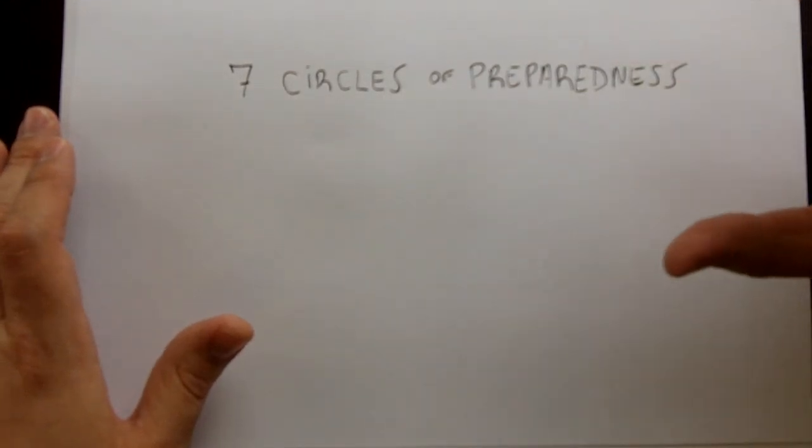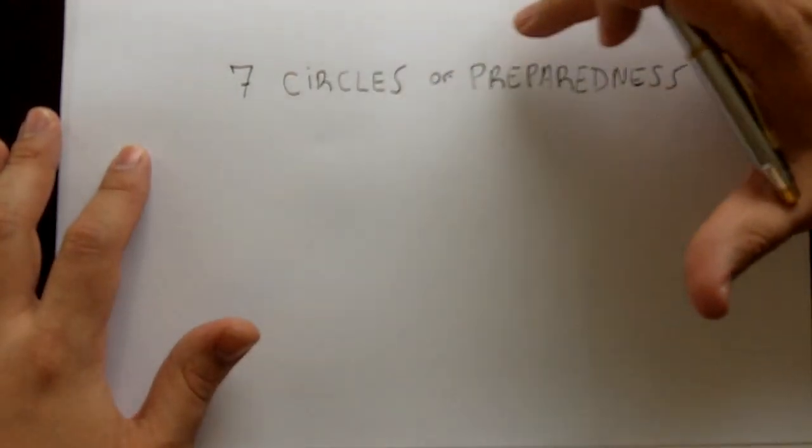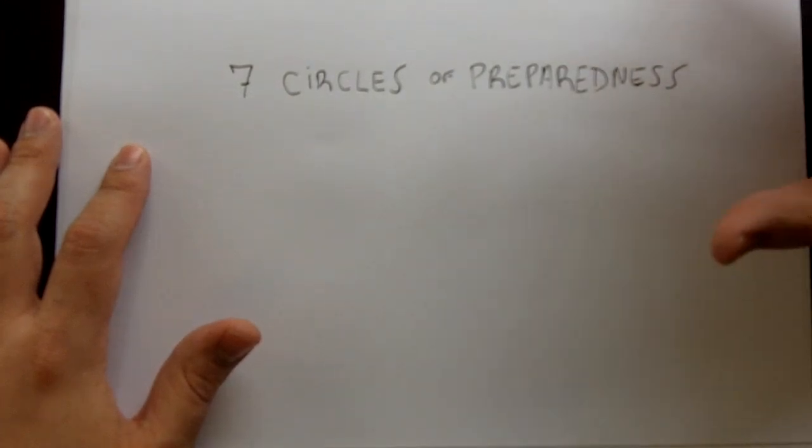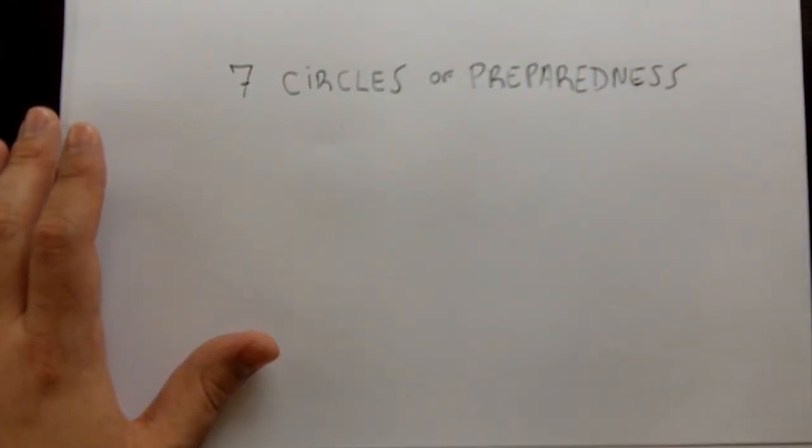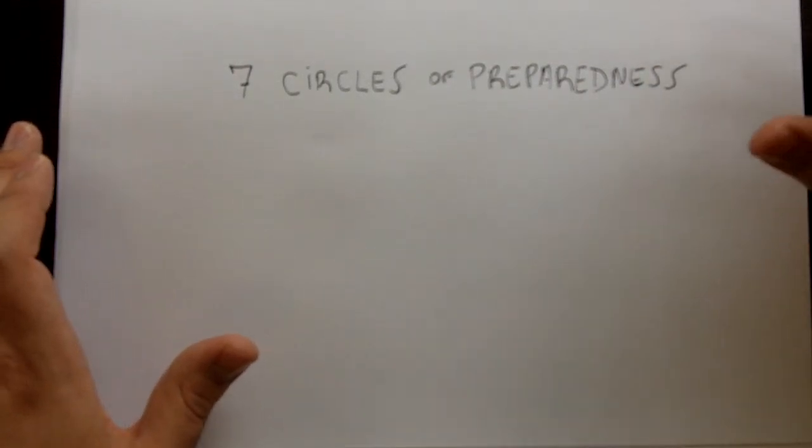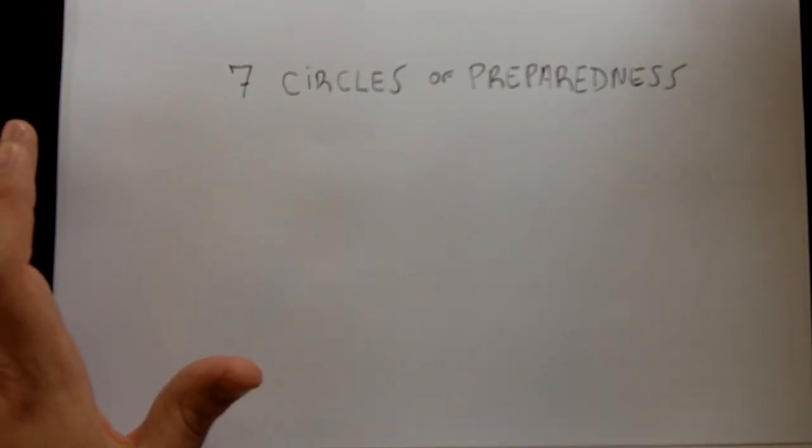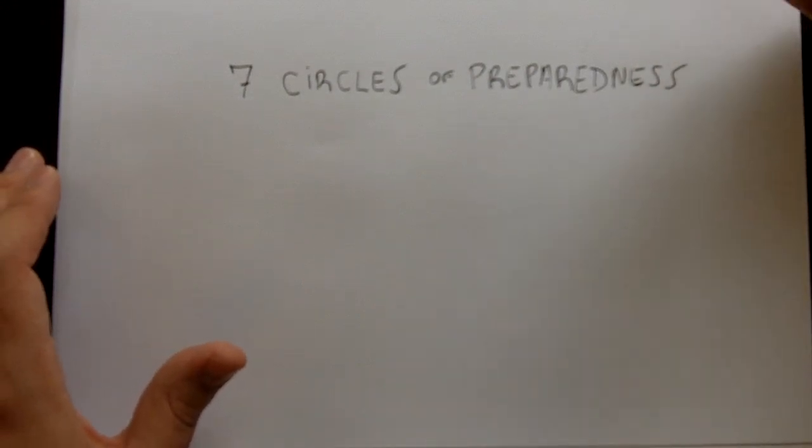Last year I did an article in my blog called The Five Circles of Preparedness. This is an expanded version of that philosophy. It went from five circles to seven circles. It's a way in which I view things, a way to put some logic to what I've been doing, and I think it's a possible way of organizing your own preparedness.